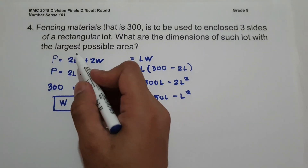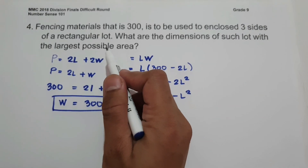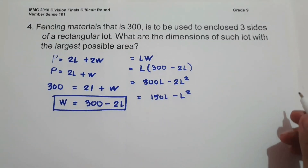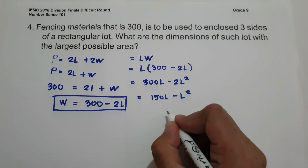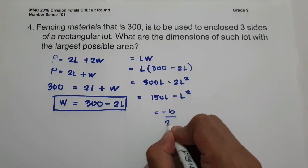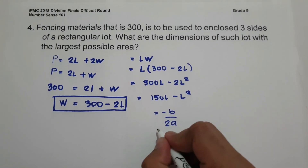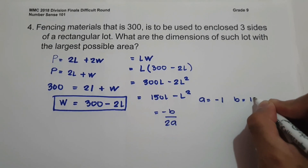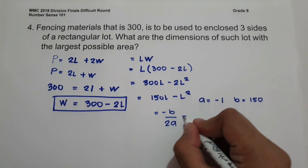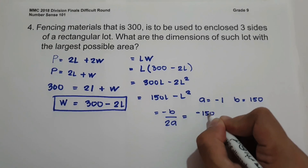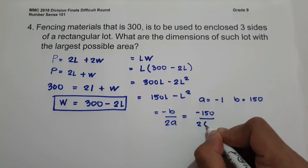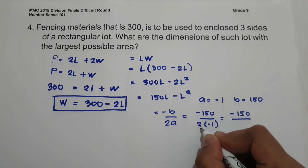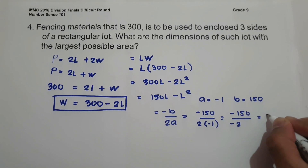Since we want the largest possible area (maximum), we use the vertex formula H = −B / (2A). Here A = −1 and B = 150 (from 150L − L²). So L = −150 / (2 × −1) = −150 / −2 = 75.